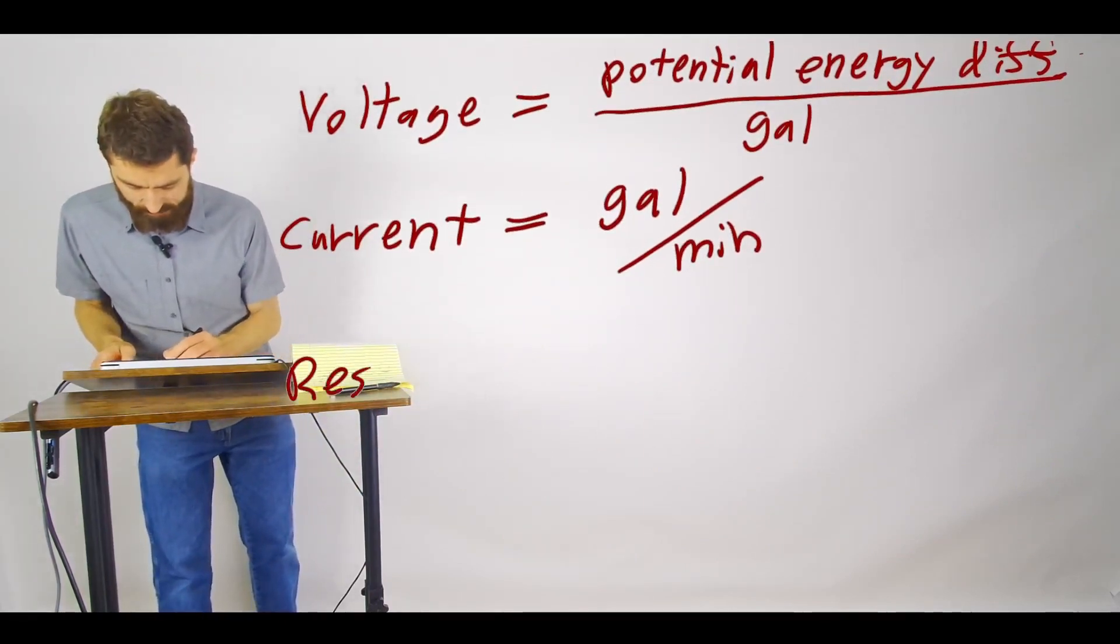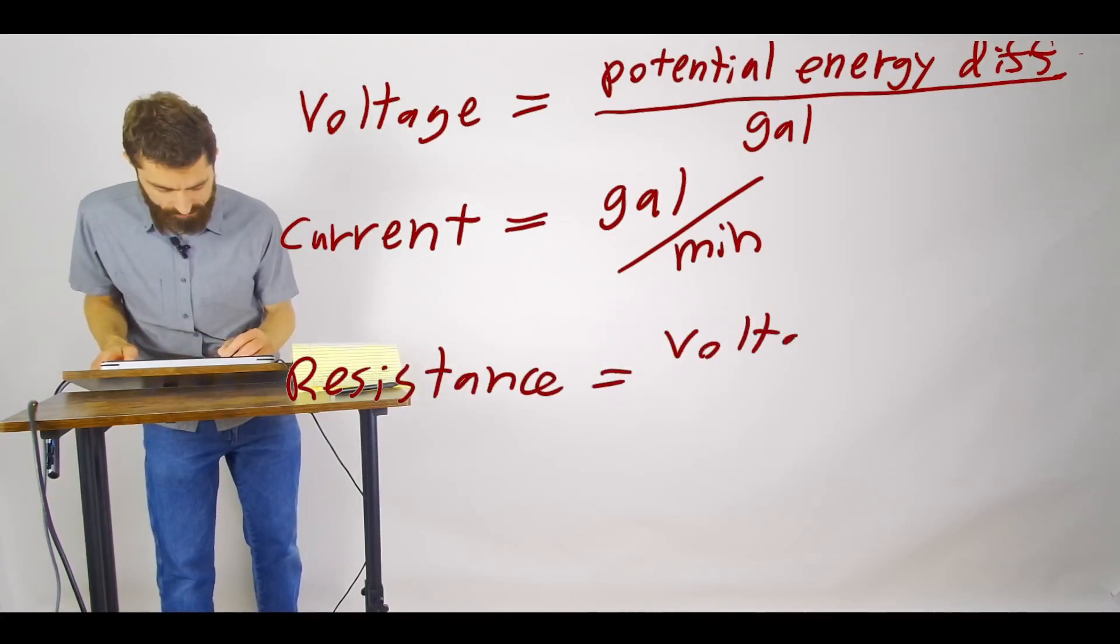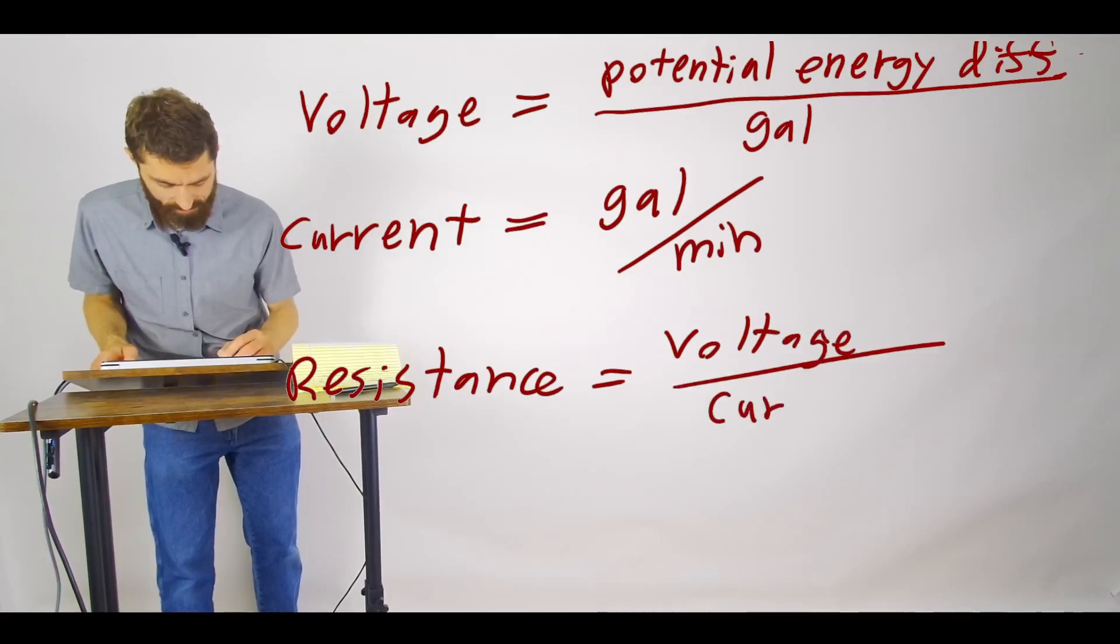The resistance is equal to the voltage divided by the current.